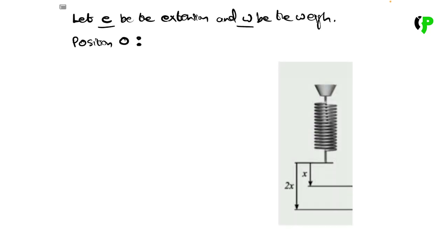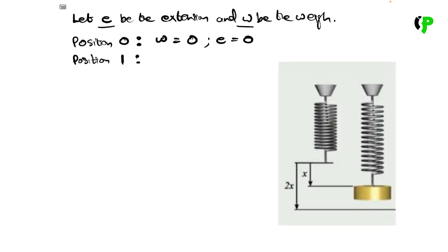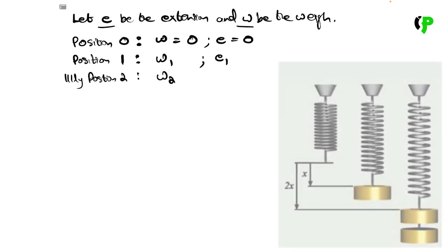At position zero, there is no weight, so the extension is zero. When the weight equals W equals 0, the extension is 0. For position 1, we have weight W1 and extension E1. Similarly, for position 2, we have weight W2 and extension E2.